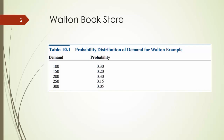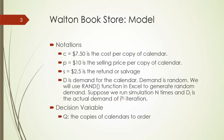Let's take a look at the algebraic model for this problem. In this model, c is the unit cost per copy of calendar which is $7.50, p is the selling price per copy of calendar which is $10, and s is $2.50 which is the refund or salvage value per copy of calendar. d is the demand for the calendar which is a random variable. We are going to use the RAND function in Excel to generate random demand. We run simulation N times, d_i is the actual demand of the i-th iteration, and q is our decision variable — the copies of calendars to order.